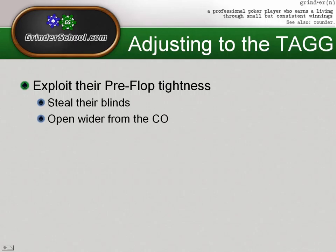Another way to take advantage of their pre-flop tightness is by opening really wide from the cutoff when these players are on the button. They're not going to be calling or three-betting enough from the button to make it incorrect for us to be opening very wide from the cutoff. This allows us to steal more blinds, steal the button basically, and if there are fish in the blinds, it allows us to play a lot of pots in position with the fish. We can also exploit their pre-flop tightness by stacking off tighter pre-flop against them.